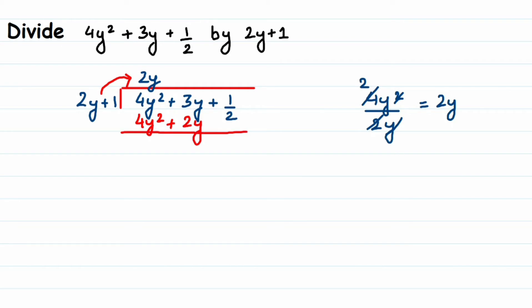Now change the signs — if you don't change the signs, your answer will come out wrong. The positive 4y squared becomes negative and 2y also becomes negative. Now cancel the first terms. Then 3y minus 2y is y, and we bring down plus one-half. So the new dividend is y plus one-half.